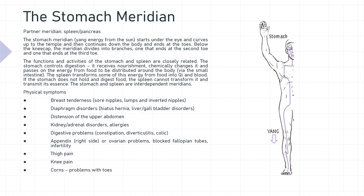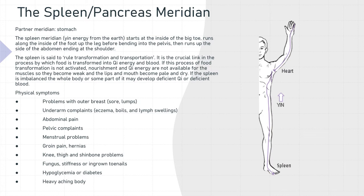The partner meridian for the spleen and pancreas is the stomach. The spleen meridian — yin energy from the earth — starts at the inside of the big toe, runs along the inside of the foot, up the leg, before bending into the pelvis, then runs up the side of the abdomen, ending at the shoulder. The spleen is said to rule transformation and transportation. It is a crucial link in the process by which food is transformed into Qi energy and blood. If this process of food transformation is not activated, nourishment and Qi energy are not available for the muscles, so they become weak and the lips and mouth become pale and dry. If the spleen is imbalanced, the whole body or some part of it may develop deficient Qi or deficient blood.